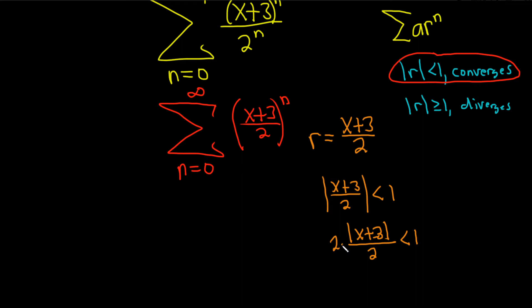Now we can multiply by 2, and that will get rid of the fraction. So we have the absolute value of x+3, and that's less than 2.